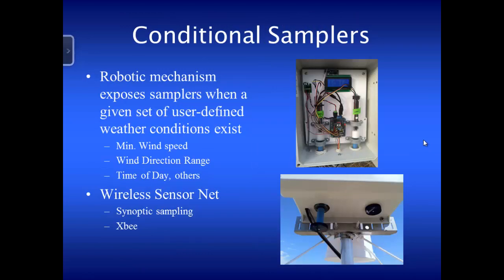So we developed what we call a conditional sampler — a robotic mechanism that only exposes the cartridge if the wind is above a certain speed, the wind direction is in a certain arc, and it's a certain time of day. We developed lots of different versions using a wireless sensor network, using meteorological data to decide when to deploy and retract them. The diffusive samplers sit inside a tube; when conditions are acceptable the controller extends them out the bottom to take a reading.